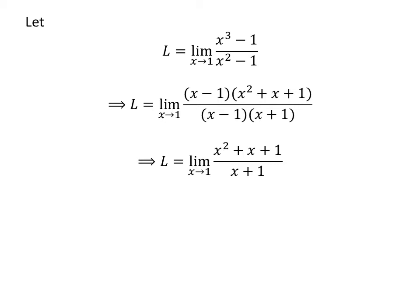Cancelling out the common factor (x minus 1) in the numerator and denominator gives us L is the limit of (x squared plus x plus 1) over (x plus 1) as x approaches 1.